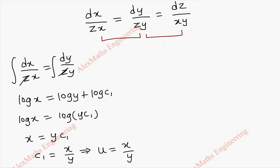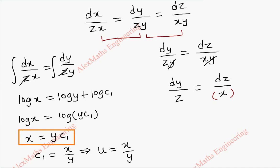In the same way, taking the last two terms, we get dy by zy equal to dz by xy. We can cancel y on both the sides. We notice that this is dy by z and this is dz by x. We have dy and dz, but we have a variable x here, so we cannot integrate this. But from the first solution, the value of x is y into c1, so I am going to replace here dy by z equal to dz by y into c1.